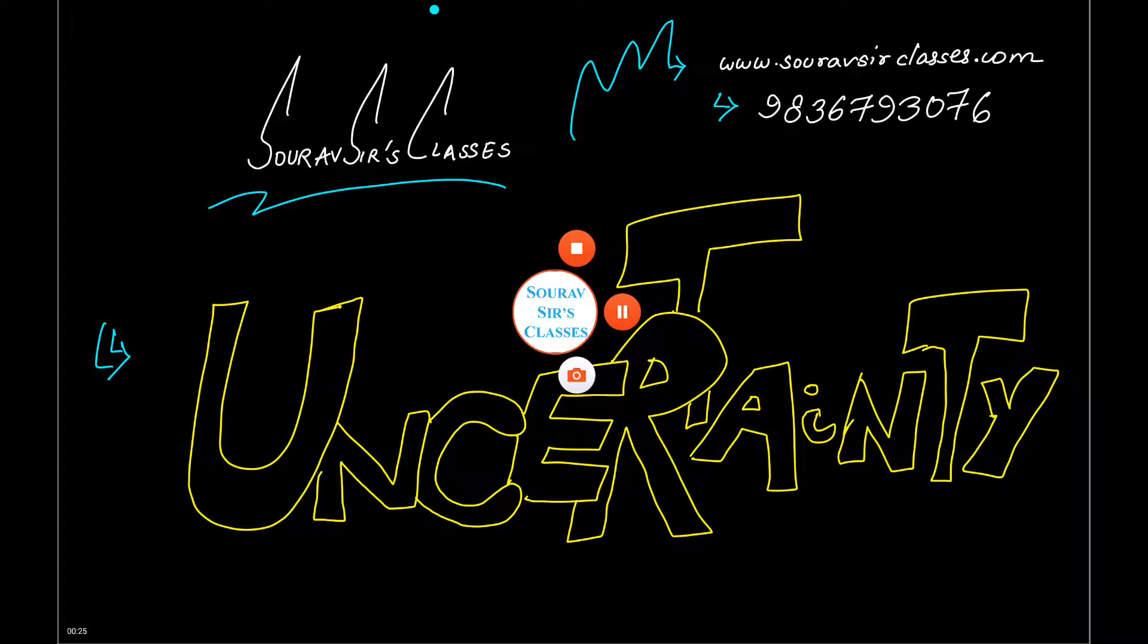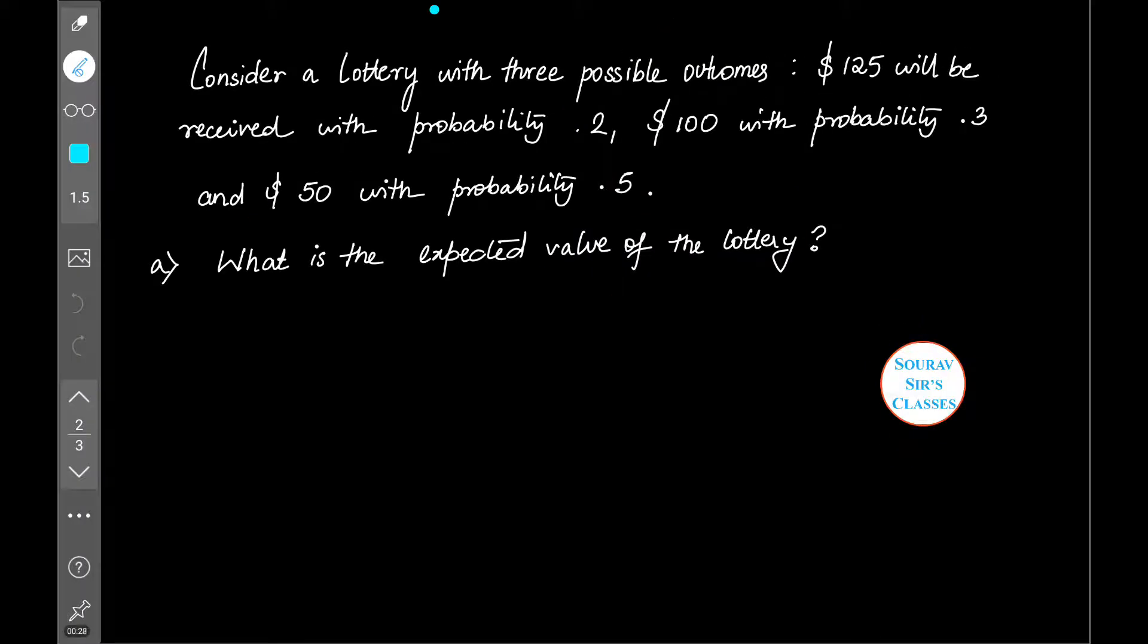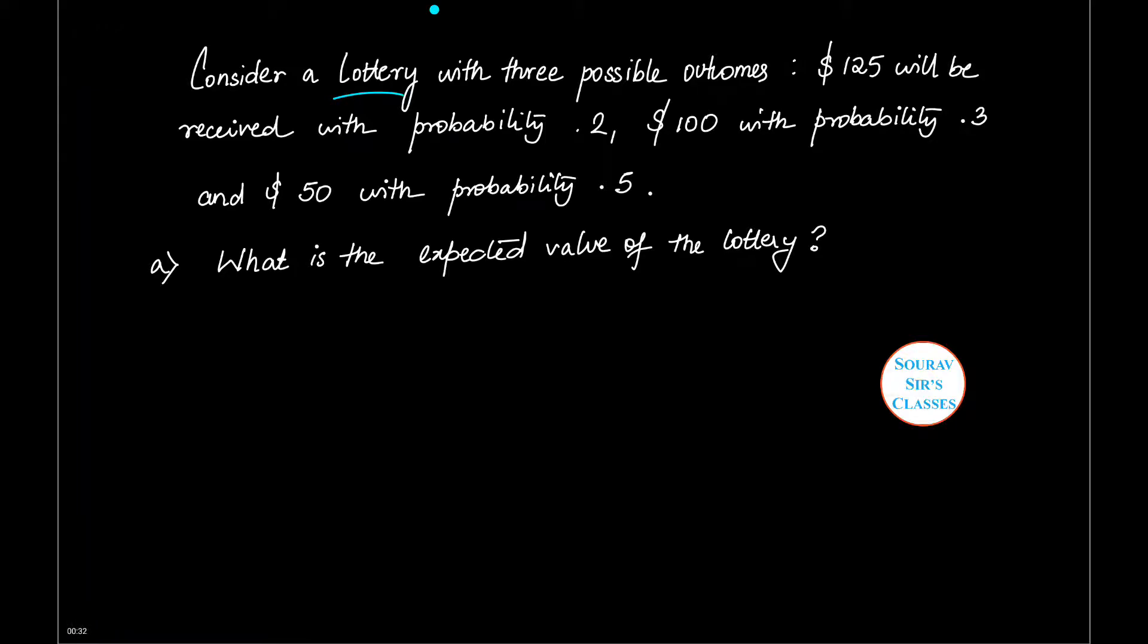Now let us have a look at the question. The question says there is a lottery with three outcomes along with its probability: monetary outcome is $125 you can get with a probability of 0.2, $100 with a probability of 0.3, and $50 with a probability of 0.5.